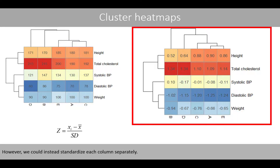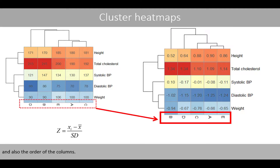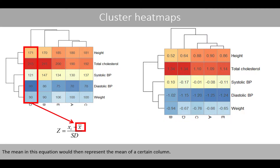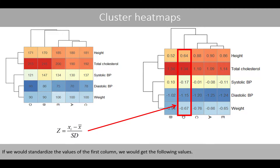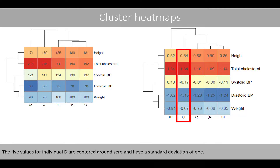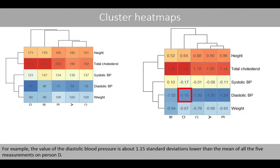However, we could instead standardize each column separately. Note that this will change the dendrogram as well as the order of the columns. The mean in this equation would then represent the mean of a certain column, x_i represents all the values in that column, and sd is the standard deviation of the values in that column. If we standardize the values of the first column, the five values for individual D are centered around 0 and have a standard deviation of 1. For example, the value of the diastolic blood pressure is about 1.15 standard deviations lower than the mean of all five measurements on person D.